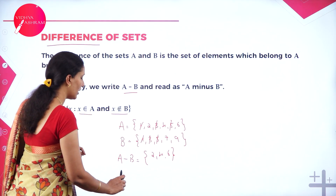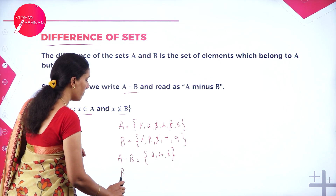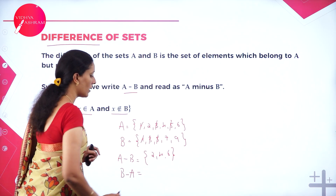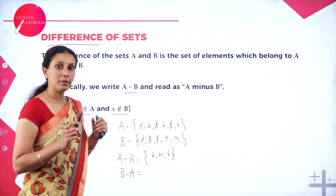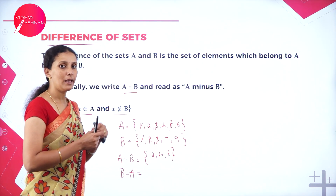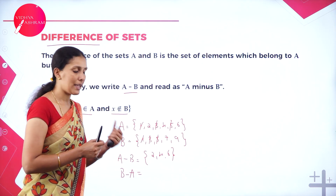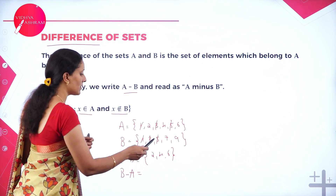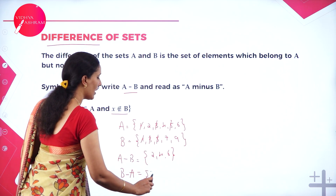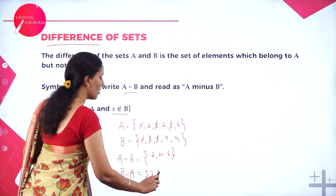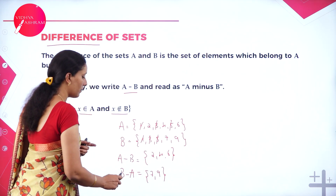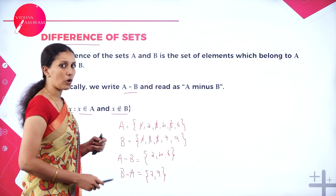This can also be written in another form: B minus A. B minus A means elements only in B but not in A. So what are the elements only in B? That is 7 and 9 — the only elements in B that are not in A.